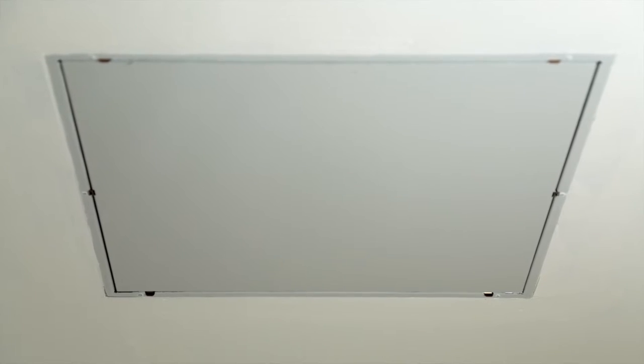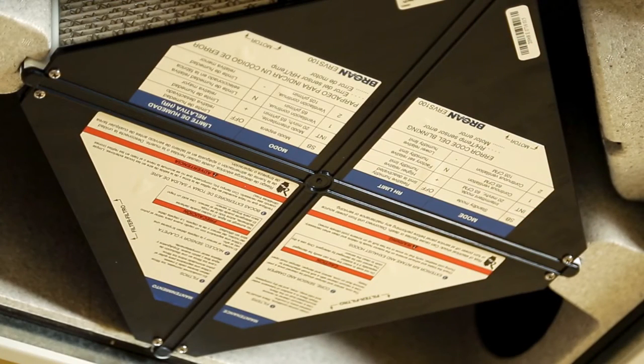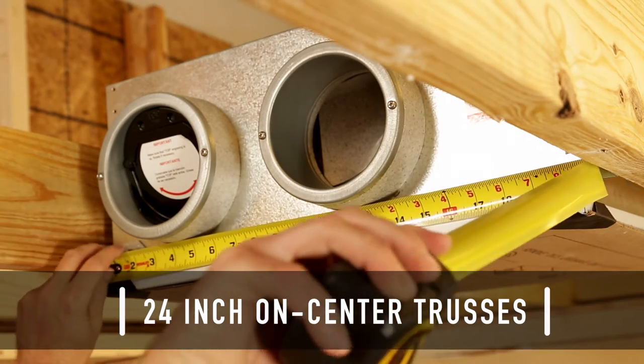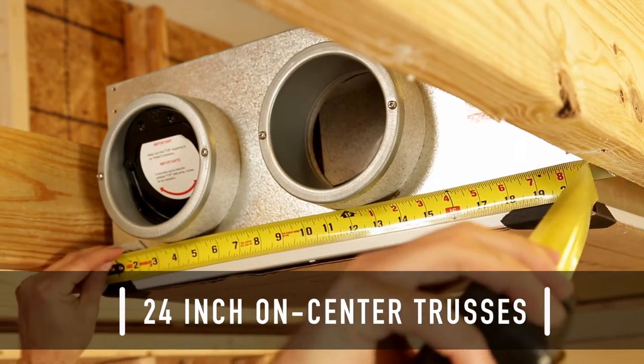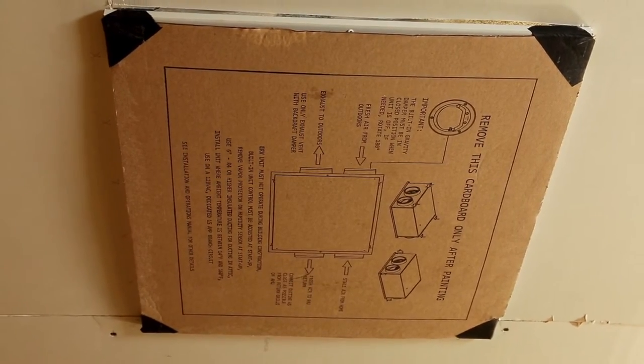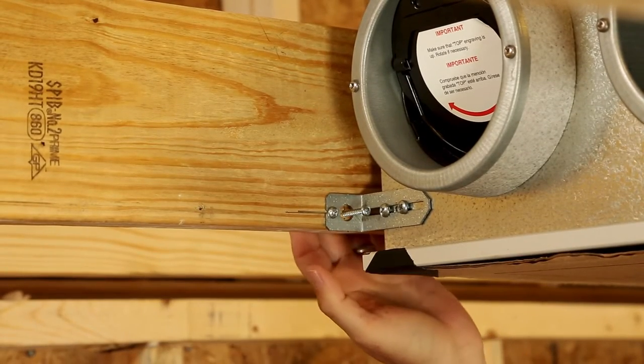Mounting the ERVS-100 in the ceiling makes it easy for homeowners to perform system maintenance from within the living space. When mounted in the ceiling, the system is installed between 24-inch on-center trusses. The ERVS-100 is designed for optimal installation during the construction phase of a home. Install between trusses prior to the installation of drywall on the ceiling.